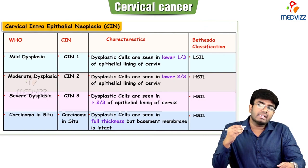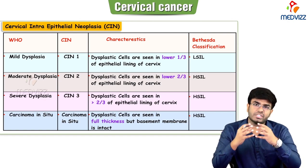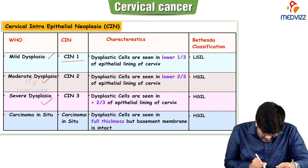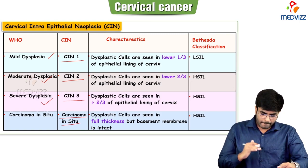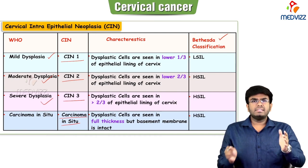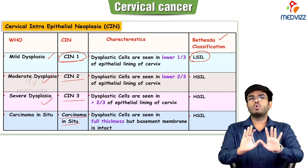Cervical intraepithelial neoplasia is a pre-malignant condition with dysplastic changes happening in the squamocolumnar junction or transformation zone. According to the dysplastic changes, CIN is classified into CIN1, CIN2, CIN3, and carcinoma in situ. There are two classifications: the CIN classification and the Bethesda classification. CIN1 according to Bethesda classification is L-SIL — low-grade squamous intraepithelial lesion.